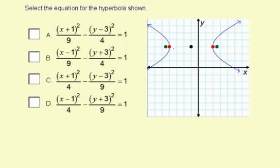The first thing I'm looking at is transverse axis is horizontal, and that means we have positive x squared, but all these possibilities have that, so there's no help there.